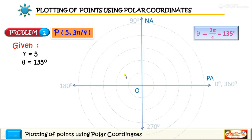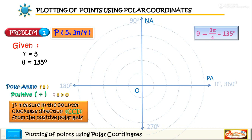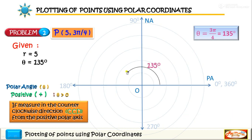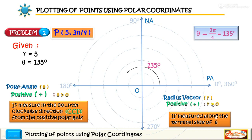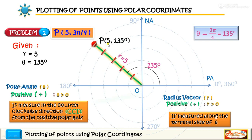Draw the normal and the polar axis. Plotting theta first — since theta equals 135 degrees and is positive and greater than 0, we will measure the angle 135 degrees in a counterclockwise direction from the polar axis. It falls between 90 and 180 degrees. Since the radius 5 is positive and greater than 0, we will measure it along the terminal side of theta, laying off 5 units — the first, second, third, fourth, and fifth unit. This gives point P with coordinates (5, 135°).